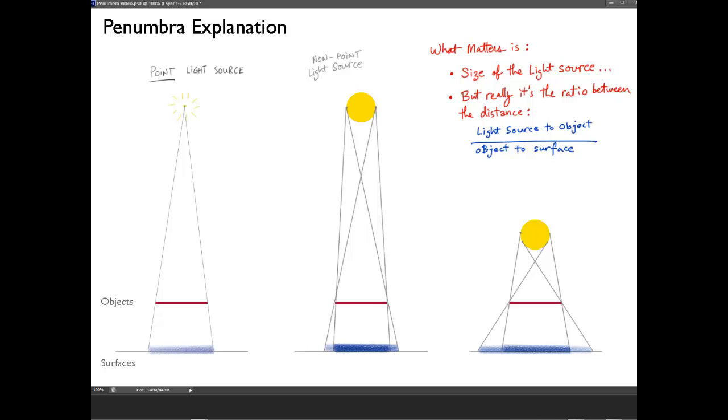The size of the light source matters, but really it's the ratio between two measurements. The distance from the light source to the object, and the distance from the object to the surface. And it's how these two ratios relate to one another. You see, this one is much closer. That's the real effect.